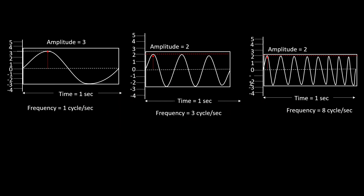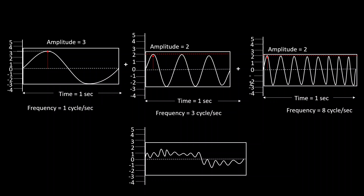Now let us consider all three sine waves: one with a frequency of 1 cycle per second, one at 3 cycles per second, and one at 8 cycles per second, with amplitudes of 3, 2, and 2 respectively. When I add all these sine waves together, I get a complex wave whose frequency and amplitude components are difficult to analyze directly.